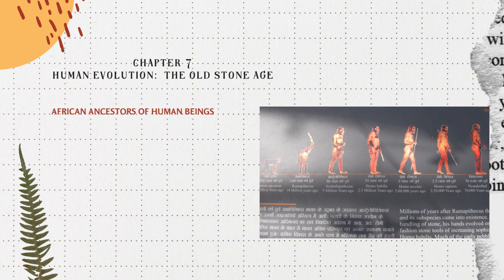Australopithecus is a term that originated in Latin and means 'southern ape.' This species possessed both ape-like and human characteristics and originated roughly between 5.5 million and 1.5 million years ago. This creature was bipedal and pot-bellied with a very small brain case measuring 400 cubic centimetres. Australopithecus was marked by some elements found in homos or human beings, and was the last of the pre-human hominids, also called protohuman.